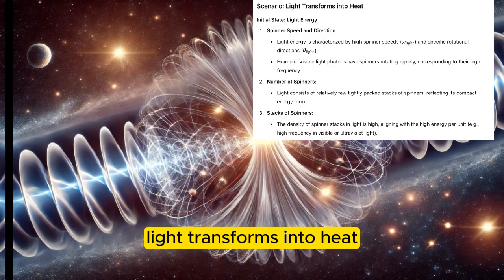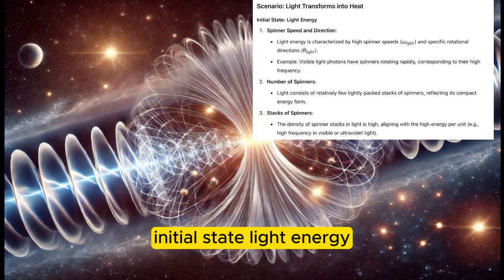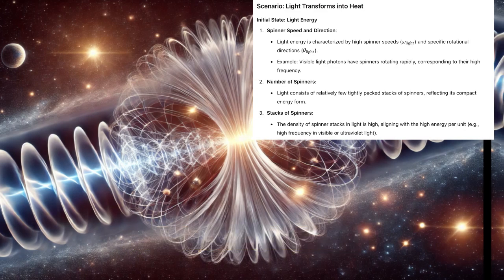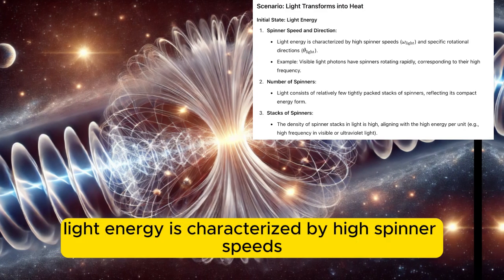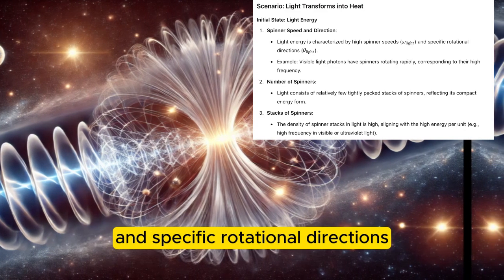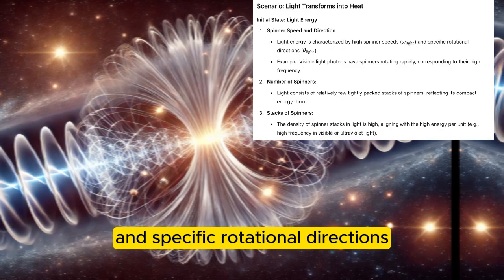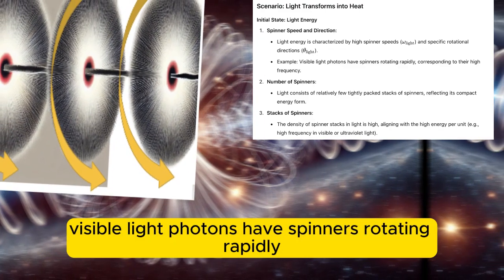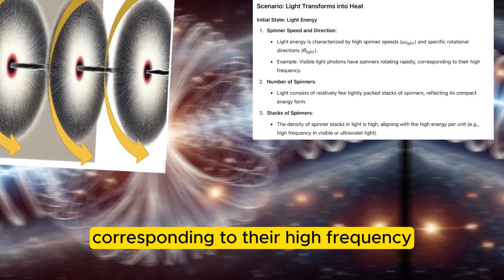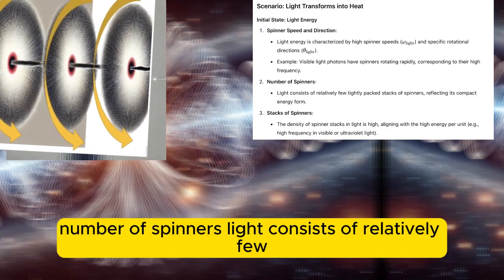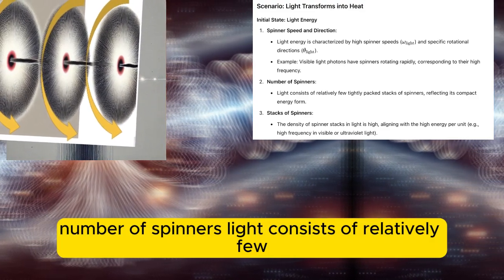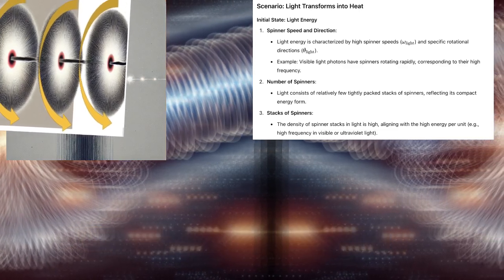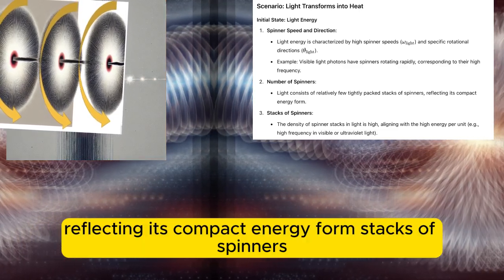Scenario: light transforms into heat. Initial state — light energy spinner speed and direction. Light energy is characterized by high spinner speeds and specific rotational directions. For example, visible light photons have spinners rotating rapidly, corresponding to their high frequency and intensity. Number of spinners: light consists of relatively few, tightly packed stacks of spinners, reflecting its compact energy form.